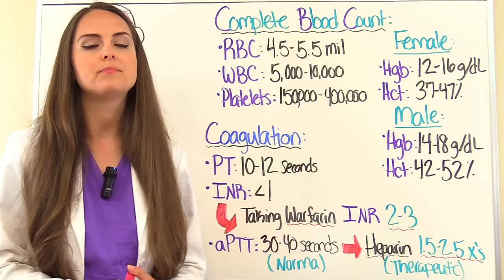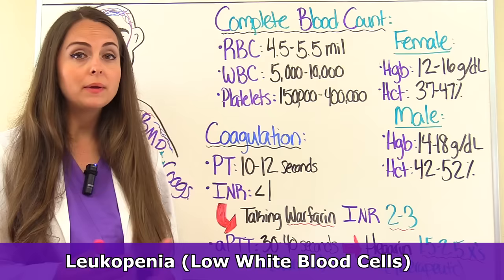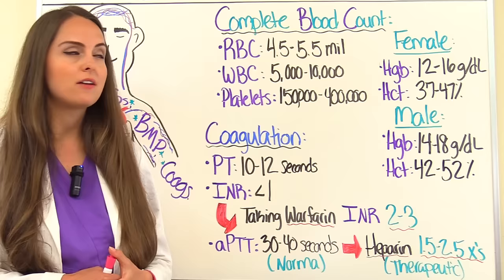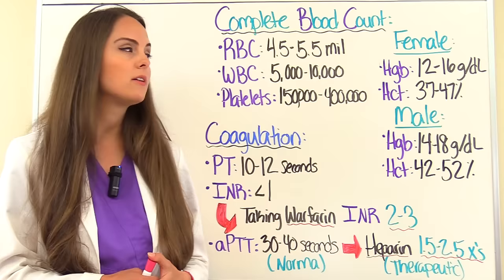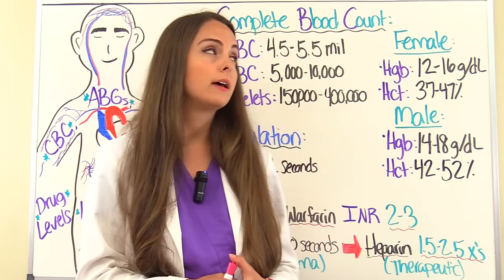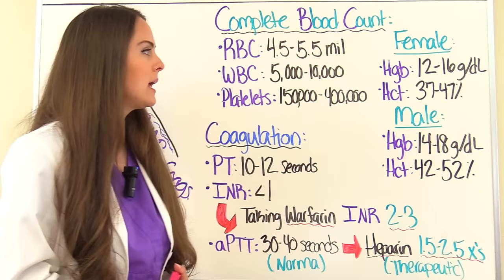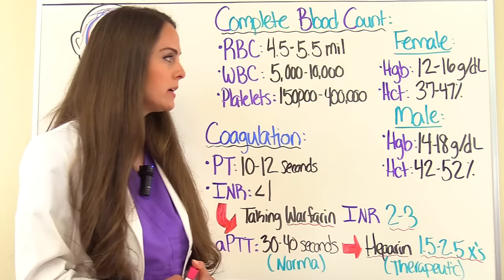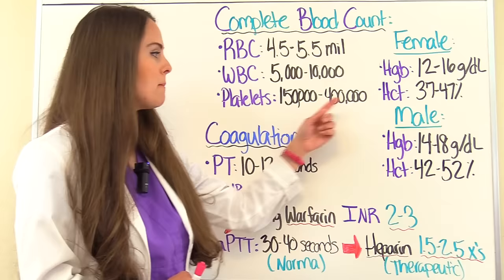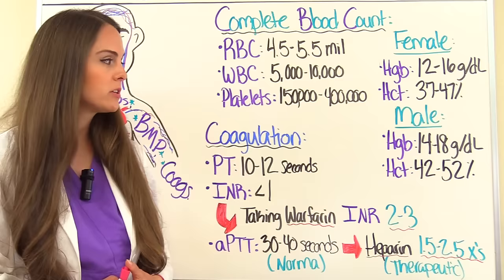A patient with leukopenia has a low white blood cell count — less than 5,000. Now let's look at hemoglobin and hematocrit levels, which tell us about our red blood cells. We really use this when we're transfusing packed red blood cells. It varies between female and male. For a female, a normal hemoglobin range is 12 to 16 grams per deciliter and normal hematocrit is 37 to 47 percent. For a male, a normal hemoglobin is 14 to 18 grams per deciliter and a normal hematocrit is 42 to 52 percent.